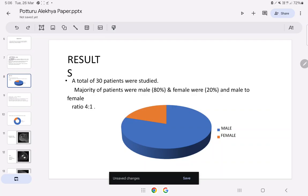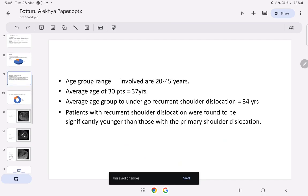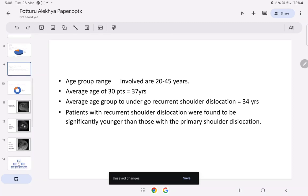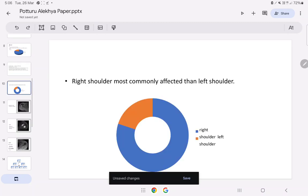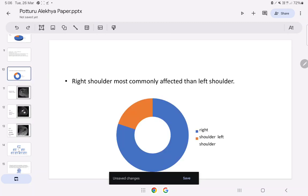Results: Total 30 patients were studied. Majority were male and females were 20%. Male to female ratio 4 is to 1. Average age group is 34 years and average age of 30 patients is 37 years. Age group range is 20 to 45 years. Right shoulder most commonly affected than left shoulder.